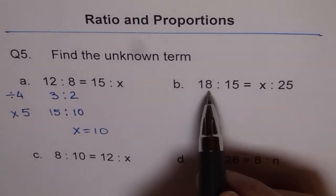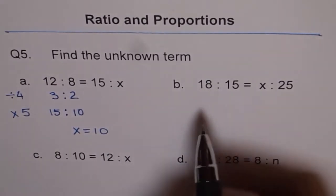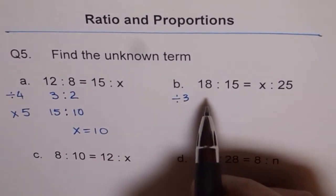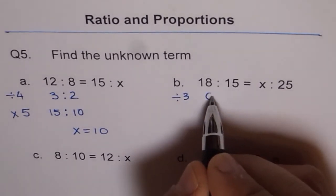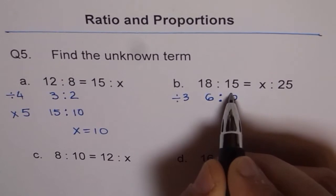So, let's reduce the left side to the lowest terms. What is the common factor here? Both can be divided by 3. When you divide 18 by 3, you get 6. So this becomes 6 is to 5.